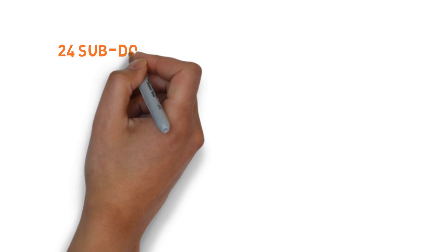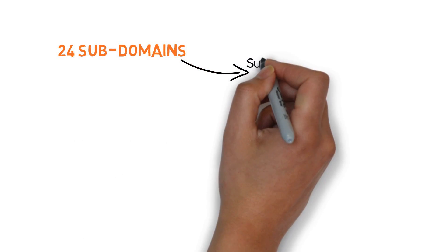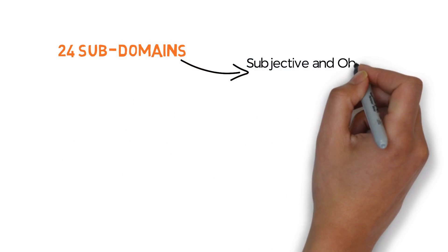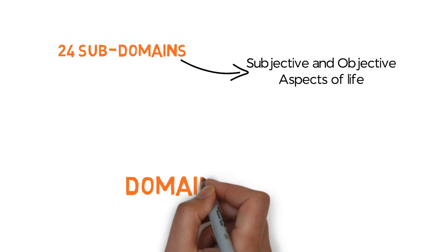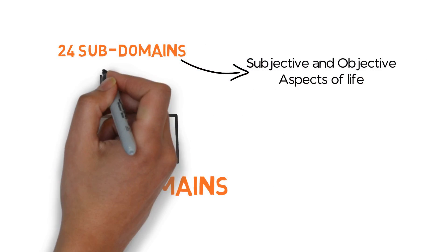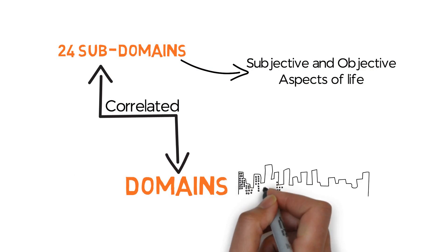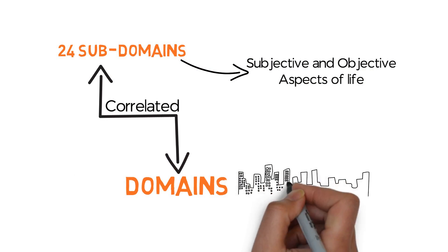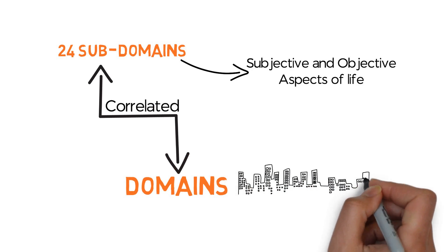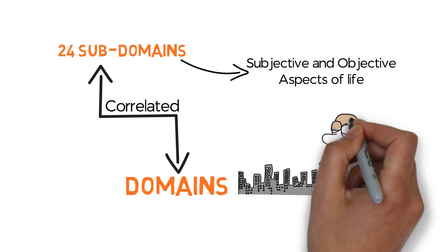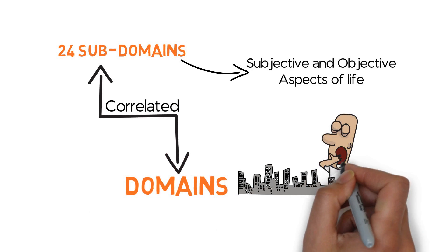The domains and subdomains, embracing subjective as well as objective aspects of life, are potentially correlated. For example, there is an influence of noise — that is, environmental context — on sleep and rest, that is, physical health.